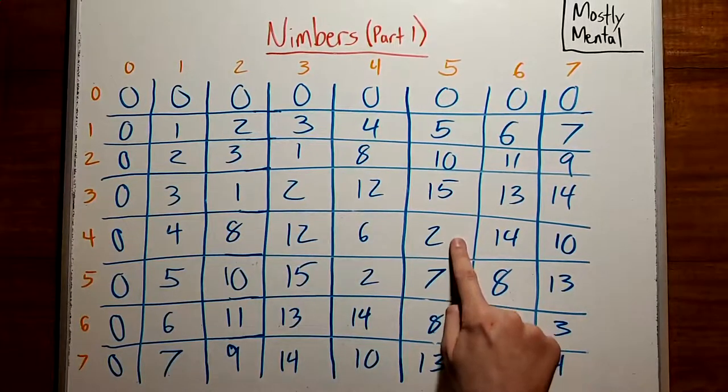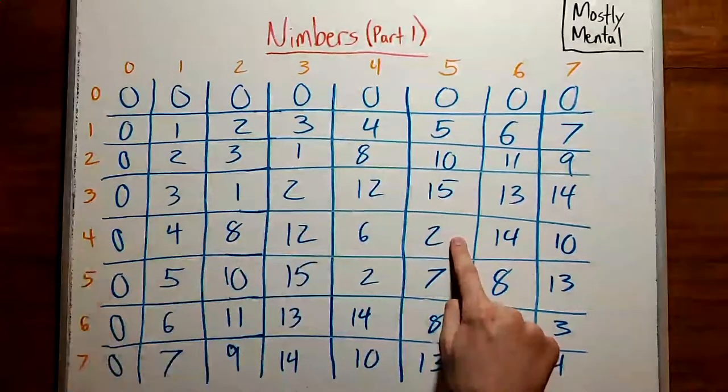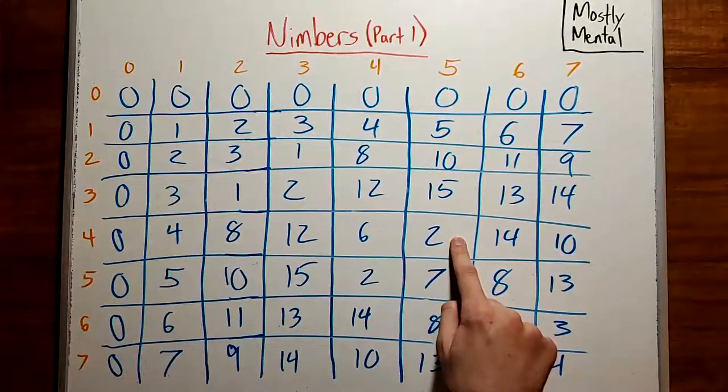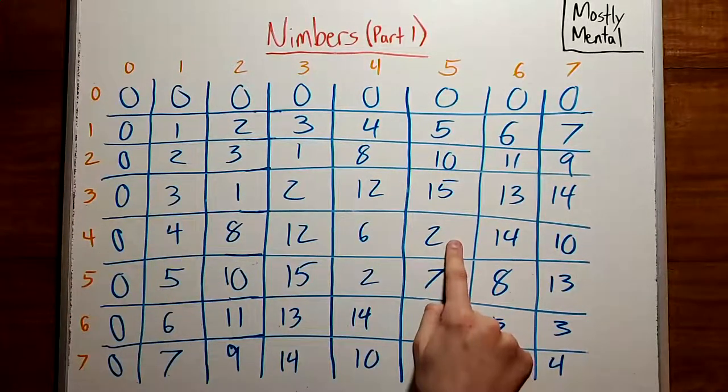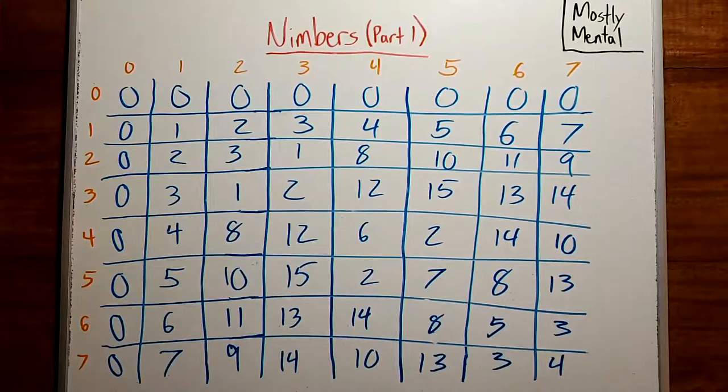Zero times anything is zero. One times anything is itself. And so we can use this as a definition for nim number multiplication. The nim number at coordinates a, b is a times b. So five times four is two. And if you try a few numbers, you'll find that this multiplication is commutative, it's associative, and it distributes over nim addition. In other words, with this addition and multiplication, the nim numbers form a commutative ring. We'll have more to say about the algebraic structure in the next video, so I'll leave it at that for now.